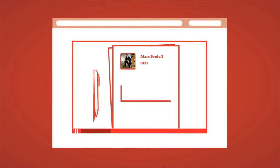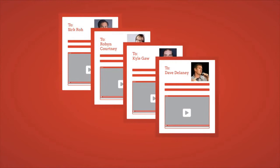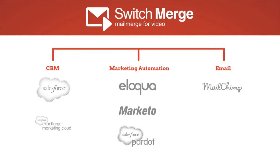The automated process works for one, one thousand, or one million leads, and it works right inside the tools marketers and salespeople already use. Engagement is automatically tracked and allows them to be smarter in their follow-up.